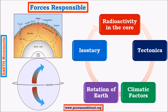We know that earth is made up of concentric layers — crust, mantle, outer core, and inner core are the important ones — along with a few others like the asthenosphere, which is significant in tectonics. In the outer core and inner core there is intense heat generated due to radioactive decay. There is also primordial or residual heat left after the formation of earth from a nebula, where the whole solar system came into existence.